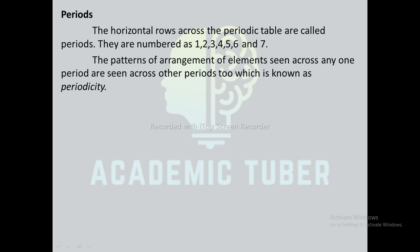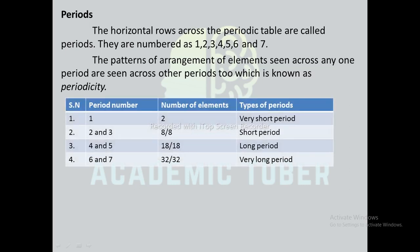Periods: the horizontal rows across the periodic table are called periods and they are numbered as 1, 2, 3, 4, 5, 6, and 7. The pattern of arrangement of elements seen across any one period is seen across other periods too, which is known as periodicity.